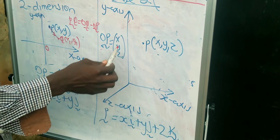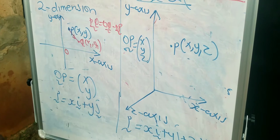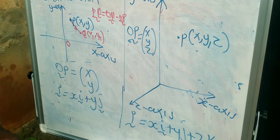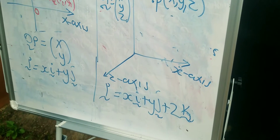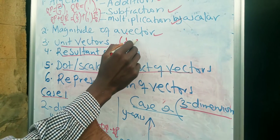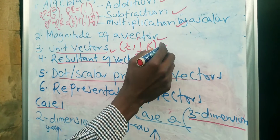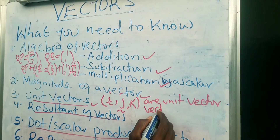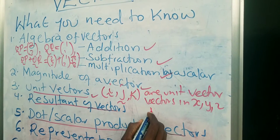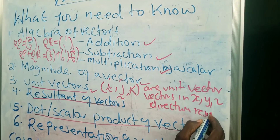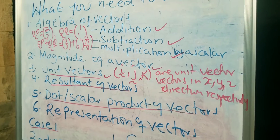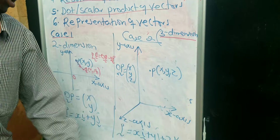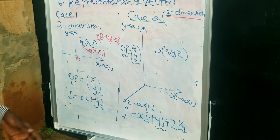Our position vector in 3D becomes (x, y, z). In vectors you will come across vectors written with letters i, j and k. These are what we call unit vectors: i, j and k are unit vectors in the X, Y and Z directions respectively. So i represents the X direction, j represents the Y direction, and k represents the Z direction. We will look at that further when we work through examples.